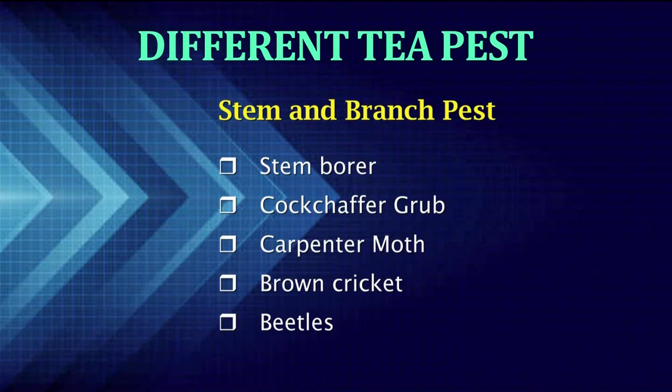The next one is the carpenter moth. The caterpillars of carpenter moth feed on the tea bark. Then, the brown cricket. It is one of the most destructive pests in the nursery. It lives in burrows in the soil, and at night it comes out of the burrows and cuts off the leaves and tender shoots, often dragging them into the burrows in the soil.